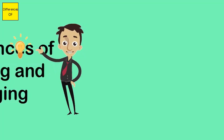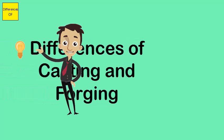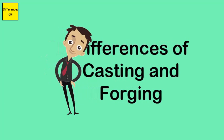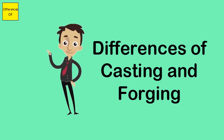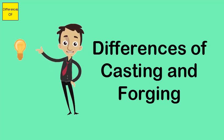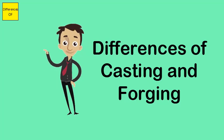Difference between casting and forging. Casting is a manufacturing process in which molten metal material is poured into molds to create the desired shape. Forging is a manufacturing process which makes use of compressing forces to enhance rigidity.